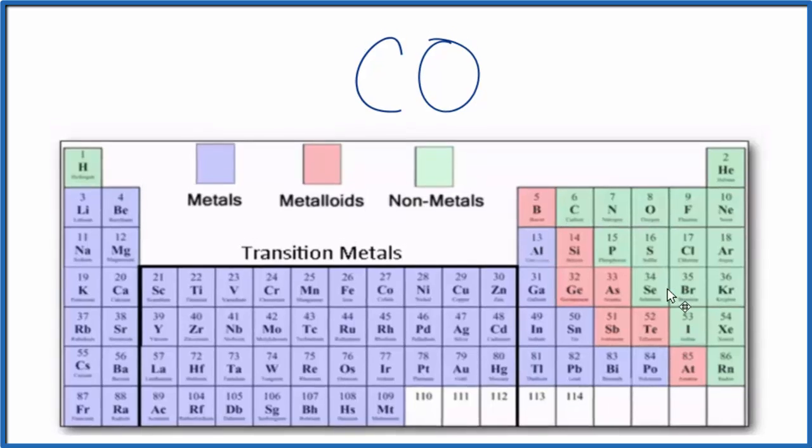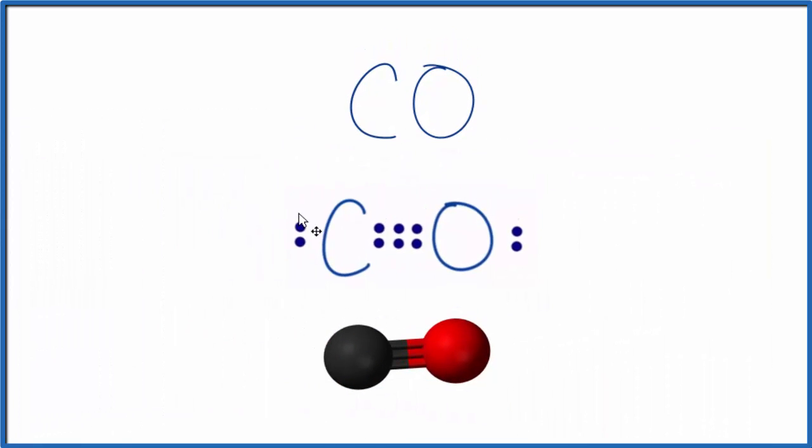Let's see what that looks like though. If we look at a Lewis structure, what we see is that these electrons here between the carbon and the oxygen form the bond and this bond is a covalent bond. These electrons are shared.